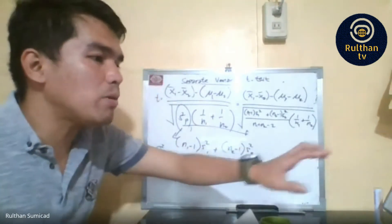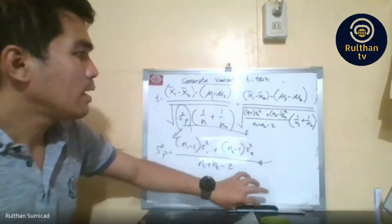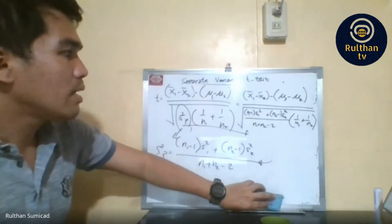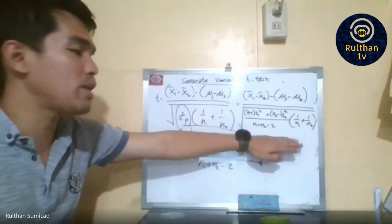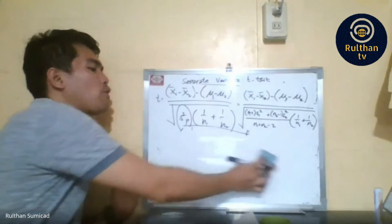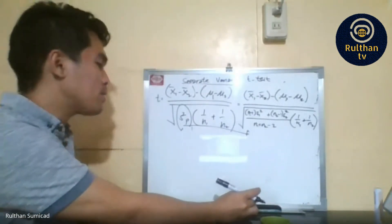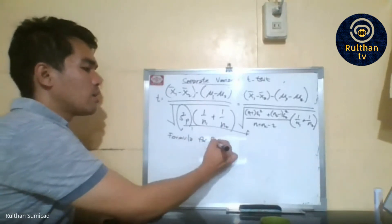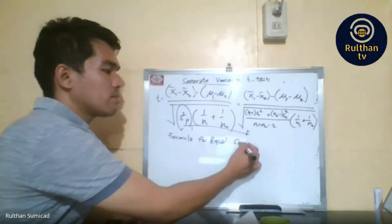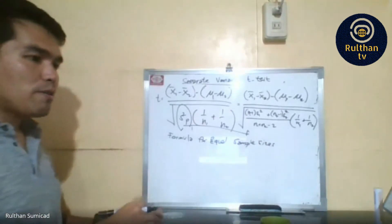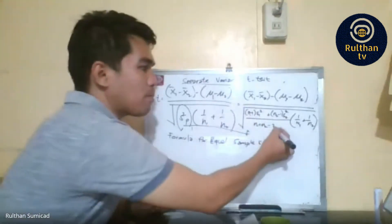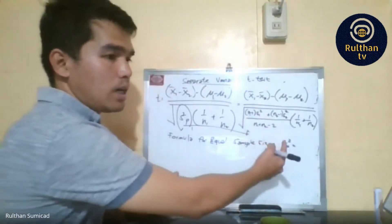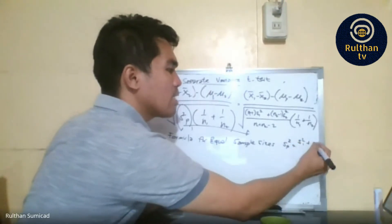For the special case of equal sample sizes, the formula simplifies. The pooled variance S-squared-P equals (S-squared-one plus S-squared-two) divided by 2. This is because when sample sizes are equal, the degrees of freedom are the same for both groups and can be simplified.